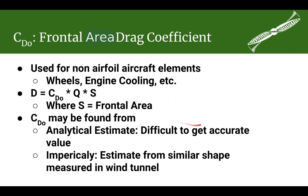The frontal area is the area of the object as you are looking at it from the front. If it has a rectangular frontal view, it would just be the width multiplied by the height. But if it is more oval-shaped, like you would get with many fuselages, then you are going to have to come up with an estimate of what that frontal area is. There are a couple of ways to come up with your C-D0 coefficient, your frontal area drag coefficient.